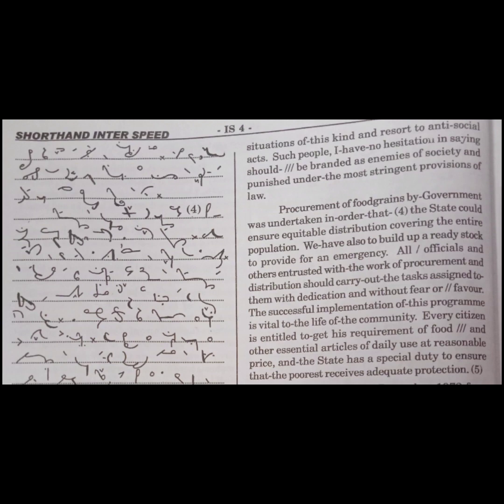The law of procurement of food grains by government was undertaken in order that the state could ensure equitable distribution covering the entire population. We have also to build up a ready stock to provide for an emergency.